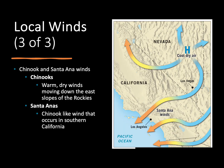Finally, our third type of local wind also deals with mountains, but very large mountain ranges like the Rockies. Once air moves up the slopes of the Rockies and starts moving down the slope on the opposite side, it's going to have very warm, dry air associated with it — and we call these the Chinooks. In Southern California, we have a Chinook-like wind that's not along a massive mountain range but along smaller mountains in California, and we call these the Santa Anas.